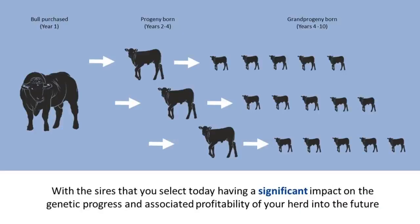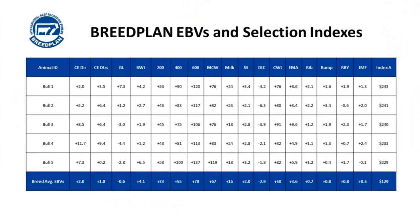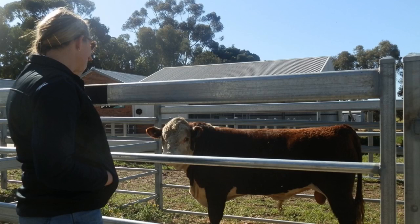With the sire that you select today having a significant impact on the genetic progress and associated profitability of your herd into the future, it is important to identify those bulls that have the most suitable genetics for your production system. In this video we will discuss how you can use breed plan information in conjunction with visual assessment to do so.